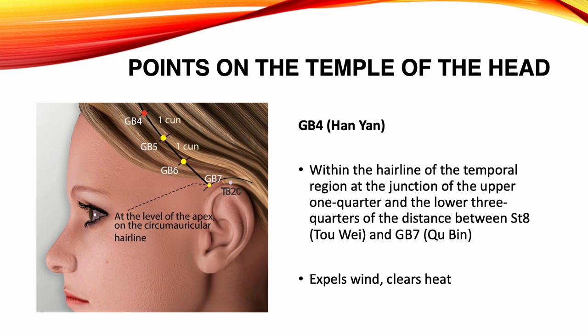Gallbladder 4, Han Yan. Location: within the hairline of the temporal region, at the junction of the upper 1/4 and lower 3/4 of the distance between Stomach 8 and Gallbladder 7. Functions: expels wind, clears heat. Indications: migraine, vertigo, tinnitus, nasal congestion, nasal obstruction, deviation of the mouth and eye, blurred vision, seizures, convulsions.